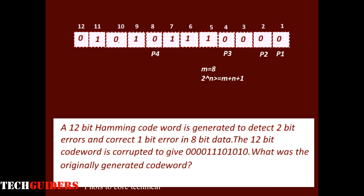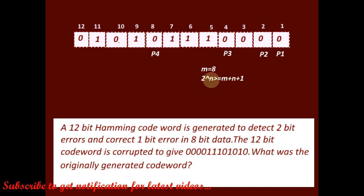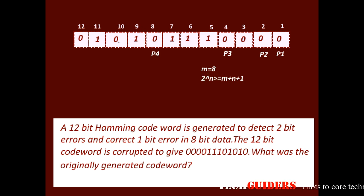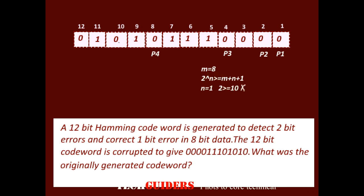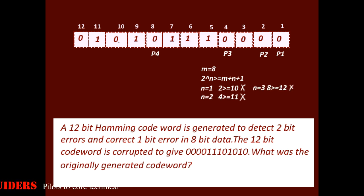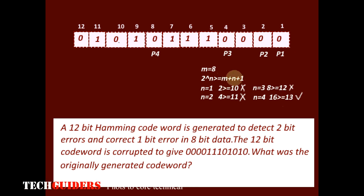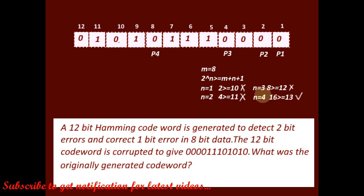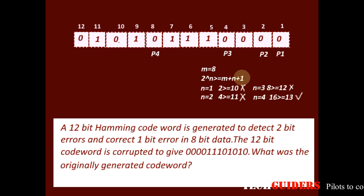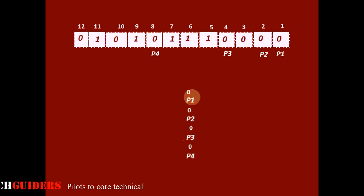The number of data bits m equals 8. What should be the value of n to satisfy the condition 2^n ≥ m + n + 1? If n equals 1, 2, or 3, the condition is not satisfied. If n equals 4, then 2^4 is 16, and m + n + 1 is 8 + 4 + 1 = 13. Since 16 is greater than 13, the condition is satisfied. The minimum value of n for the 8-bit data is 4.